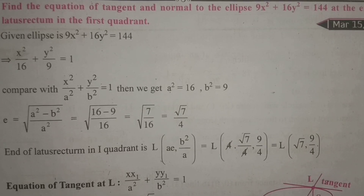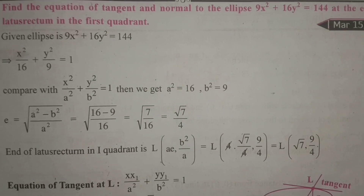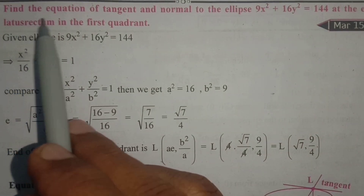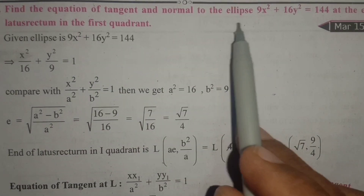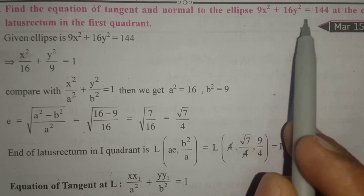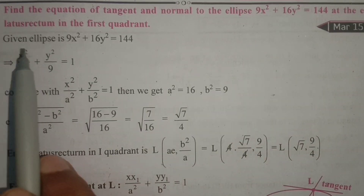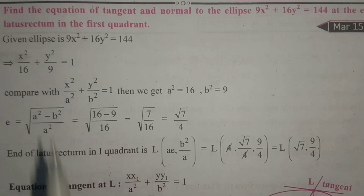Good morning students. I am going to explain the next four marks essay. Find the equation of tangent and normal to the ellipse 9x² plus 16y² equals 144 at the end of the latus rectum in the first quadrant.